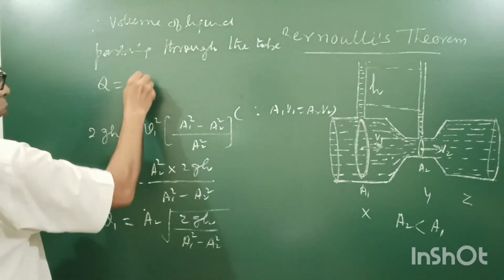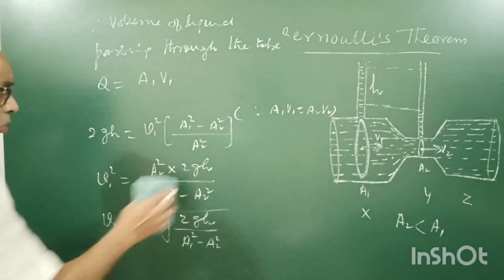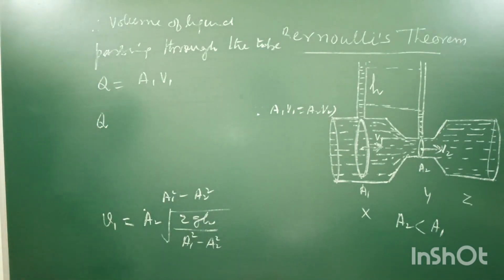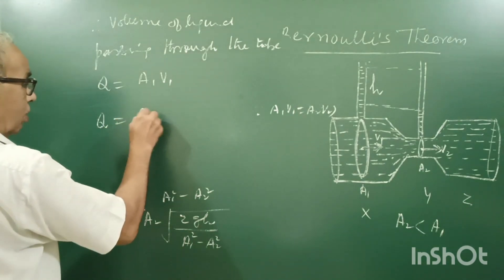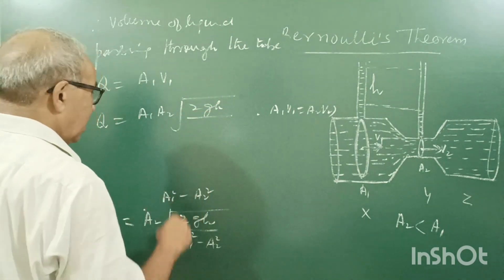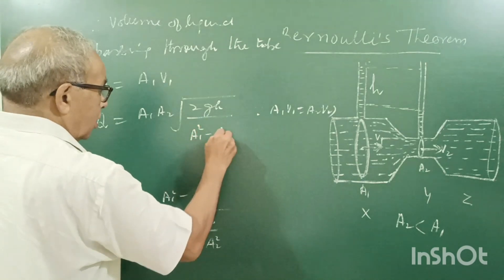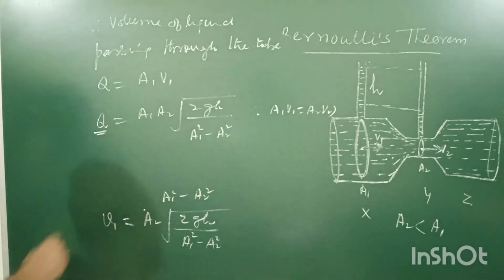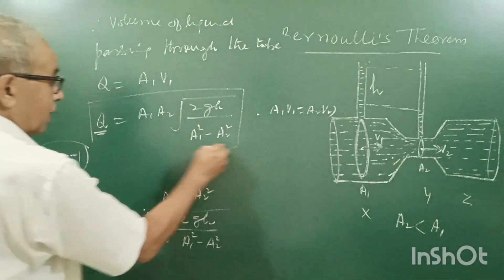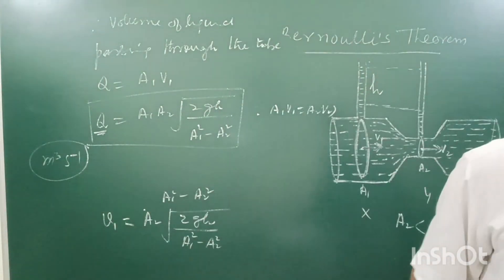If suppose Q is equal to A1 V1, Q is the volume of liquid passing per unit time, which will be A1 A2 under root 2Gh upon A1 square minus A2 square. Q is volume per time, meter cube per second. Dimensionally L³T⁻¹. Many times teachers ask you to verify it dimensionally.